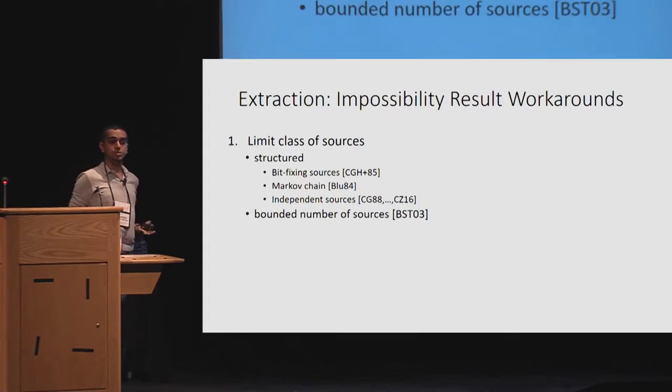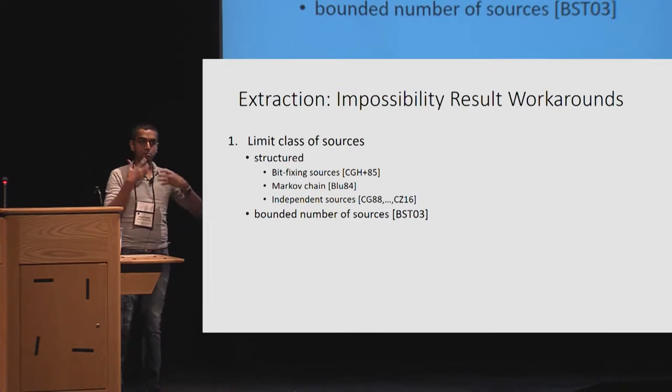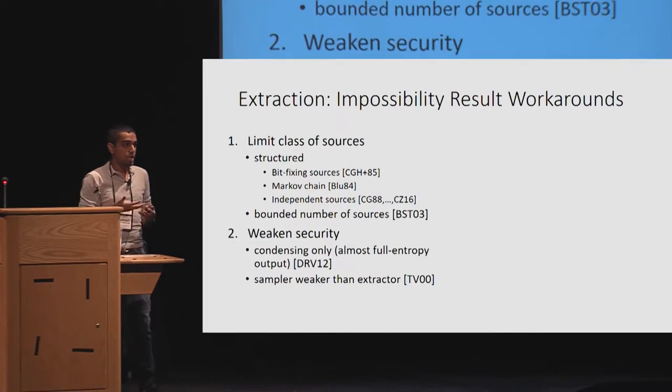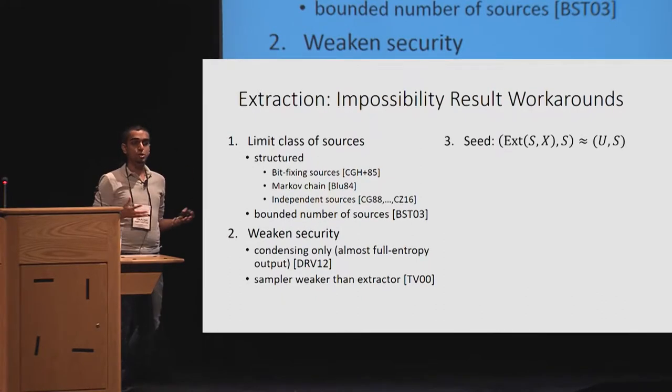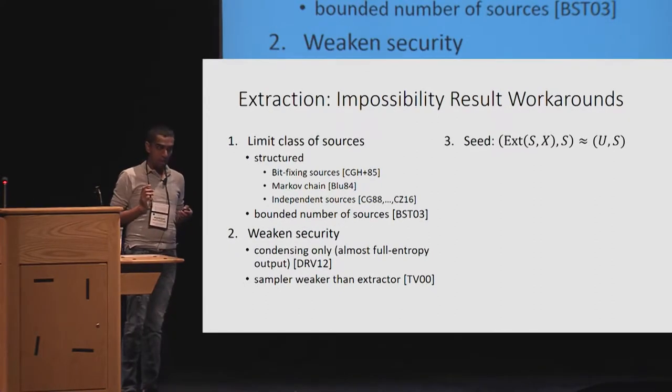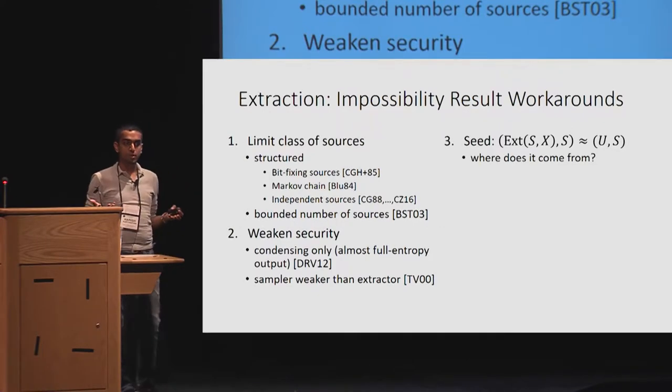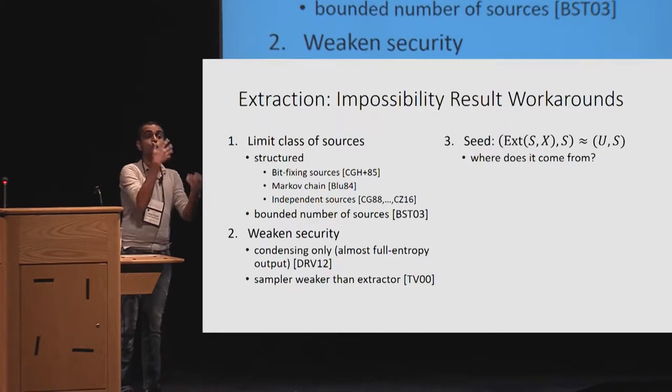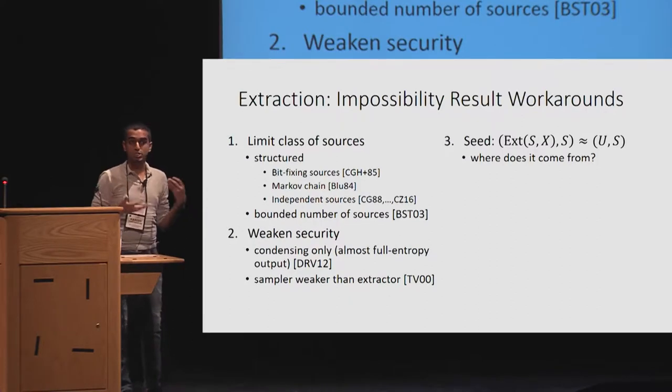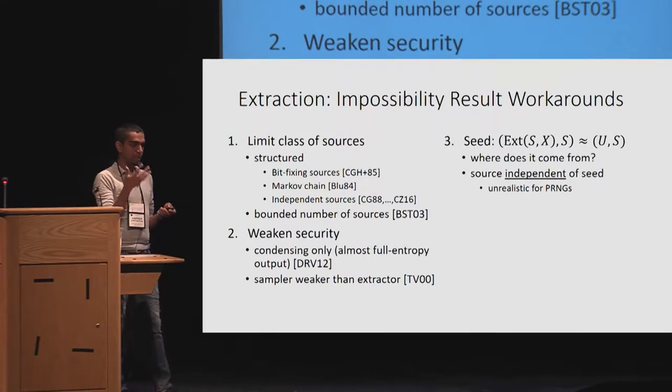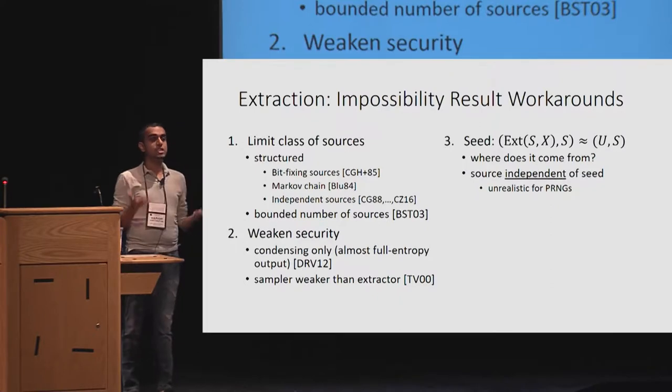The first such was to limit the class of sources. But once again, these did not deal with real practical sources. The other solution was to weaken the security. Well, as cryptographers, you would rather not weaken security. So this inspired a whole bunch of research, which became the preferred solution became to use a seed, where the extract function in addition to taking input X also uses the seed S. But where does the seed come from?